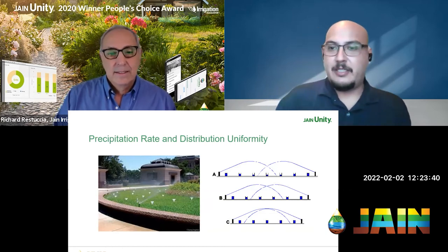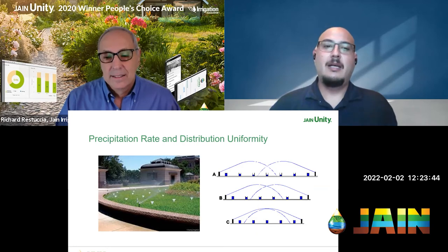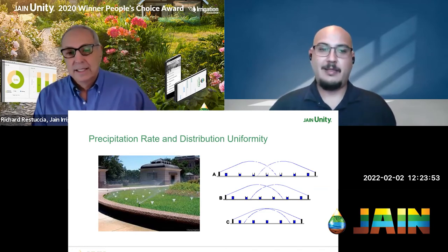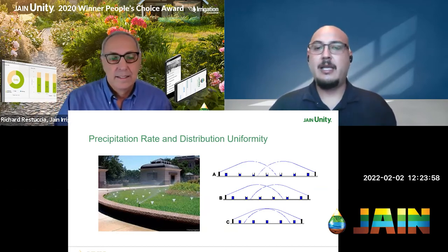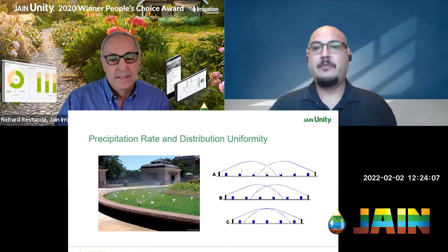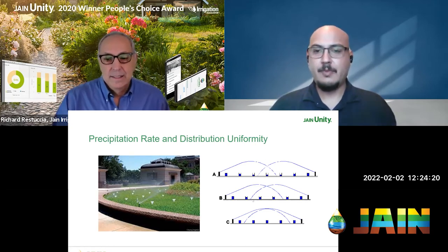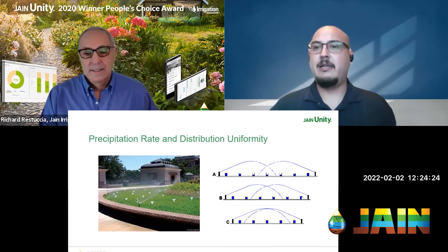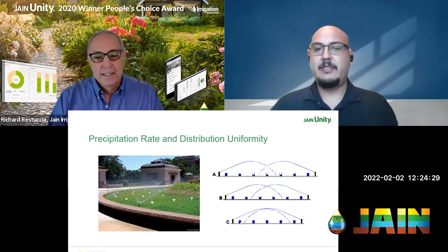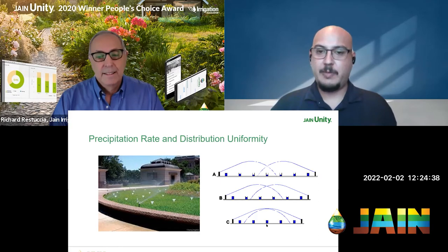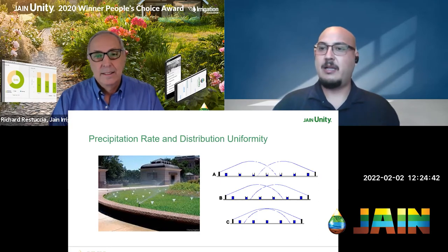A simple way to assess distribution uniformity is to do a catch can test — put out small cans on your lawn and see how evenly they fill up. The diagram on the right shows two sprinklers spaced too far apart: the cans close to the sprinkler get quite a bit of water, but further out toward the center they get less and less — not very even. Move the sprinklers closer and the cans fill more evenly. Ideally you want head-to-head coverage, where all catch cans fill evenly — though even then you're still maybe at best 70% distribution uniformity on a spray head system.